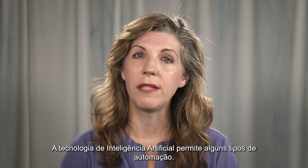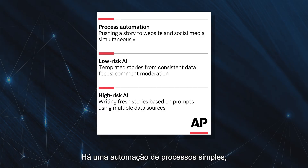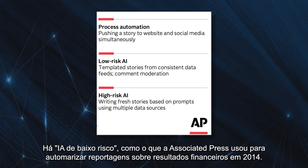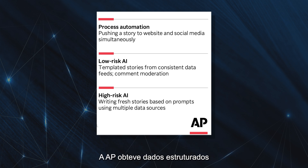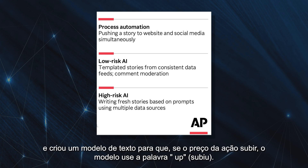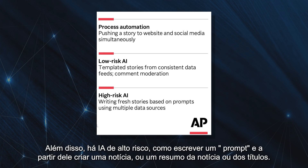AI technology powers certain kinds of automation, but there are ways to automate things without AI. There's simple process automation — something like an automated trigger that you set up to publish an article to your website and social media simultaneously. There's low-risk AI, like the Associated Press used with automated earnings reports in 2014. AP gets structured data; the content in a column is reliably the same, and using a template, if a stock price goes up the template will use the word 'up.' By using natural language generation, AP went from writing 300 earnings reports by humans to producing 3,000 reports. Then there's high-risk AI, like writing a prompt and creating a new story, a summary of a story, or headlines.